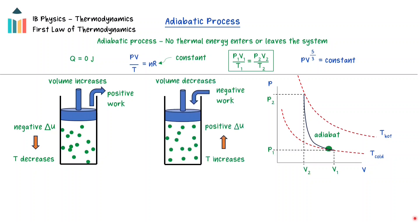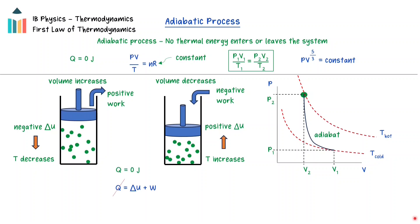The volume of an ideal gas decreases through an adiabatic compression, increasing the internal energy and the temperature. Work is done on the ideal gas by the surroundings, giving the work a negative value. In terms of the first law of thermodynamics, because no thermal energy enters or leaves the system, the work done is equal to the negative of the change in internal energy of the ideal gas. The work done by an adiabatic process can be found through the area under the pressure-volume graph.